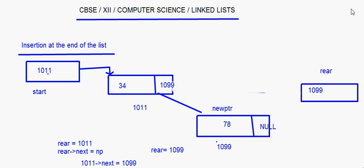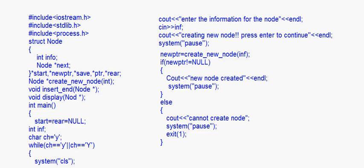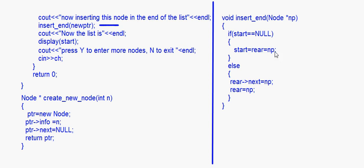After rear is equal to np, rear is having 1099, so rear is also pointing to the new last element. Whenever you have null in the next pointer of any element, that is the last element. So this is how insertion at the end of the linked list is done. Now let's go back to the program — once the insertion is done, we display the new list.